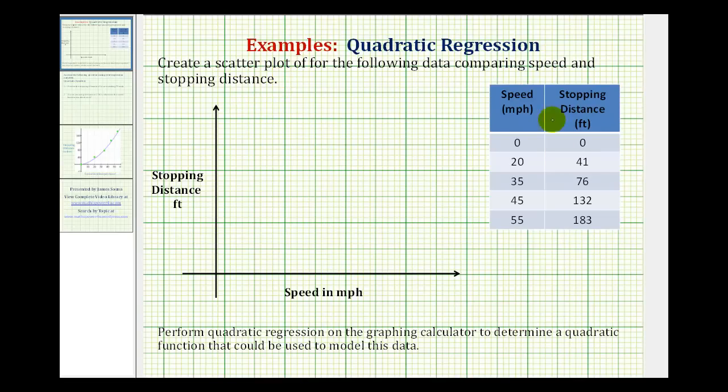We want to create a scatter plot for the given data that compares speed in miles per hour to the stopping distance in feet. Once we create the scatter plot, we can decide which type of function would be a good model for the data.